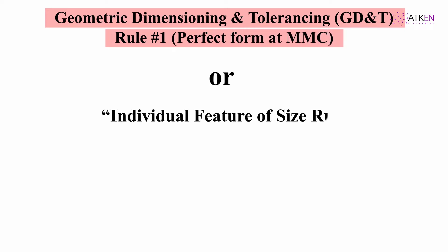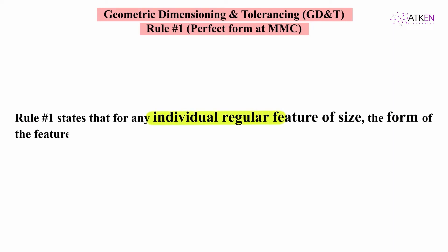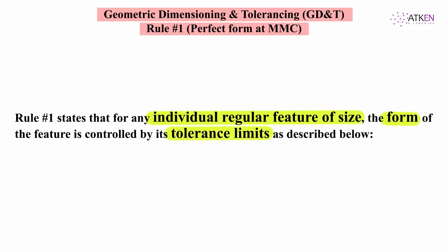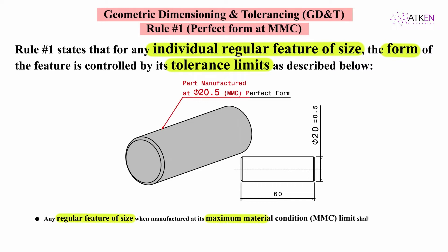Rule 1 of GD&T, also known as Perfect Form at MMC, or Individual Feature of Size, or Envelope Rule, states that for any individual regular feature of size, the form of the feature is controlled by its tolerance limits. Any regular feature of size when manufactured at its Maximum Material Condition limit (MMC) shall have perfect form.